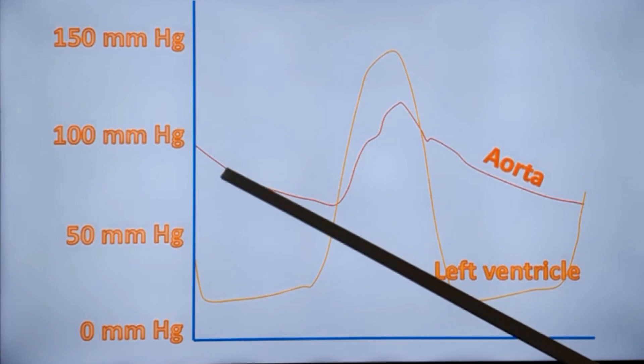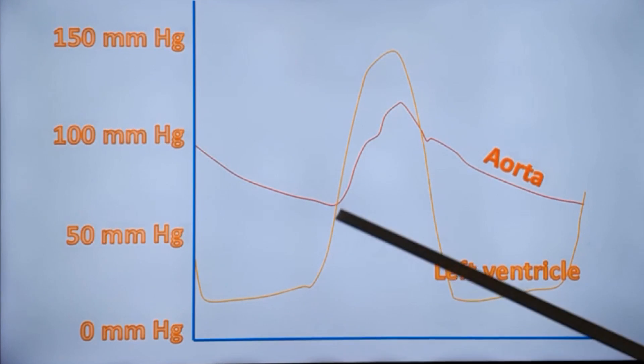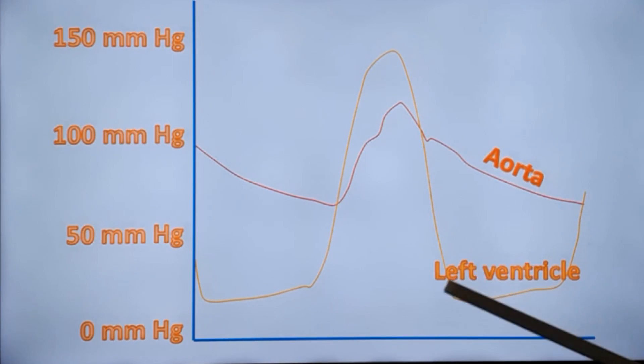And this red tracing is the pressure tracing from the aorta, while the yellow tracing is the pressure tracing from the left ventricle. This is the systolic portion, and this is the diastolic portion.